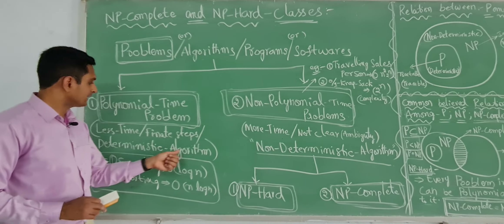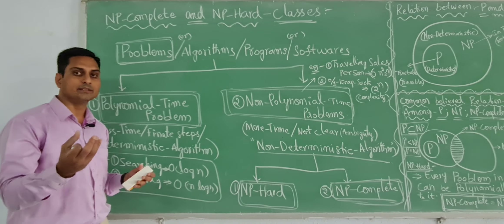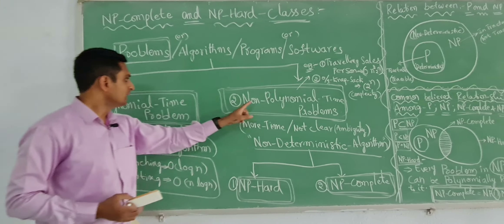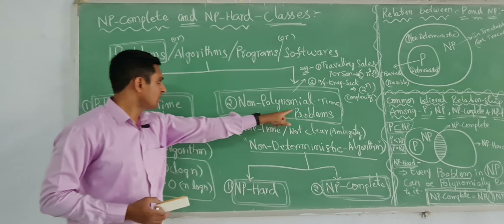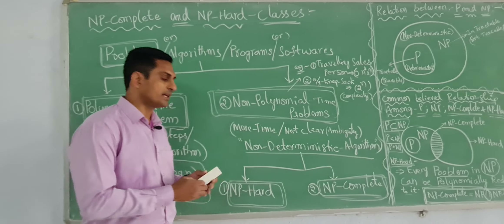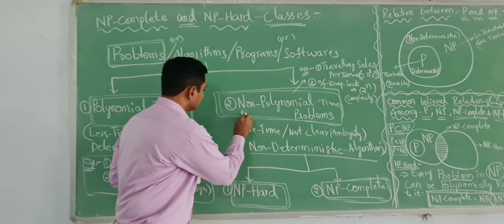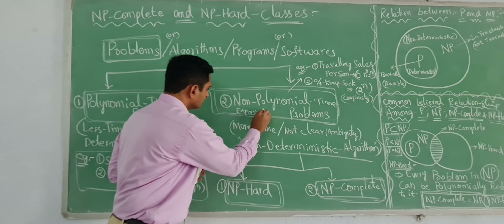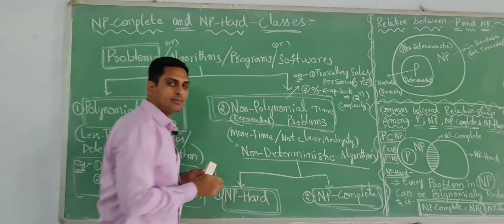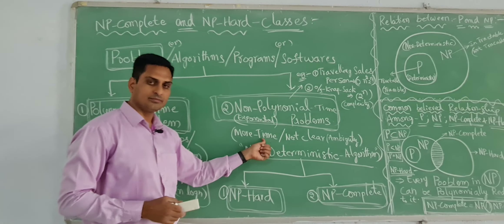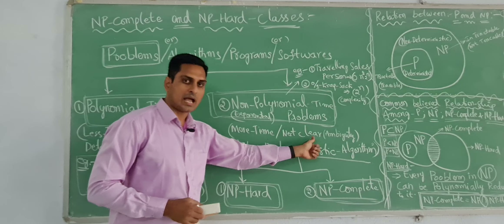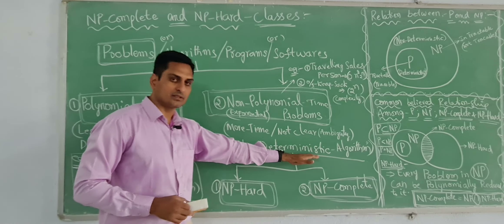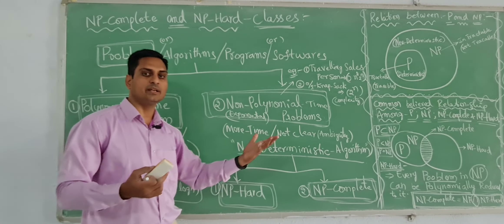Here, deterministic algorithms will be there — we have determined specific algorithms. Whereas non-polynomial time problems are nothing but exponential. Exponential time means more time. It takes more time, there is ambiguity, and the algorithms are non-deterministic — not clear.